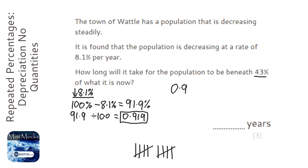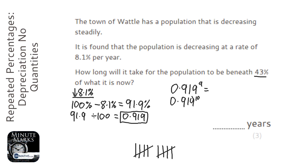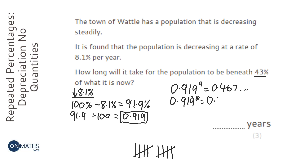To show the examiner the working, I'd write 0.919 to the power of 9 to show that's not enough — that gives 0.467 — and then 0.919 to the power of 10 to show that is enough, giving 0.429. So it's going to take 10 years.